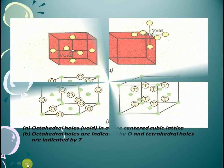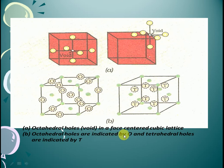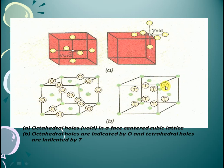Here is an octahedral void in a face centered cubic lattice. In the previous video, we have seen a face centered cubic structure. Here are the faces of the cube. Octahedral holes are indicated by O and tetrahedral holes are indicated by T. The octahedral void and the tetrahedral void are denoted accordingly.